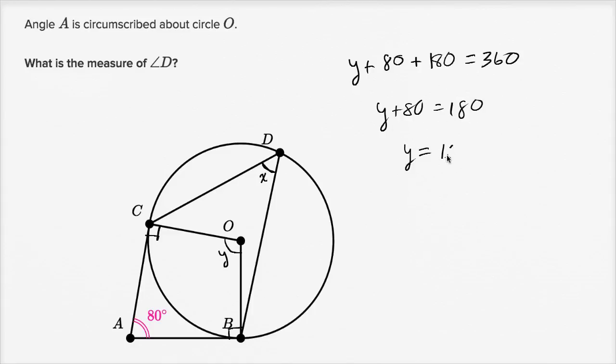And so we could have y plus 80 is equal to 180. If I subtract 80 from both sides, we get y is equal to 100, or the measure of this is 100. The measure of this interior angle right over here is 100 degrees, which also tells us that the measure of this arc—because that interior angle intercepts arc CB right over here—that tells us that the measure of arc CB is also 100 degrees.